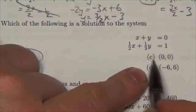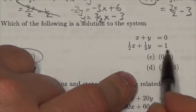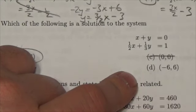0 plus 0 is 0, but half of 0 plus a third of 0 is not 1. It's not this one.